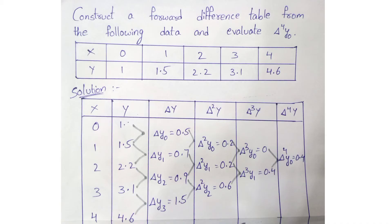First, we compute the delta y values. Delta y0 = y1 minus y0 = 0.5. Delta y1 = y2 minus y1 = 0.7. Delta y2 = y3 minus y2 = 0.9. Delta y3 = y4 minus y3 = 4.6 minus 3.1 = 1.5. These are all the delta y values in the table.